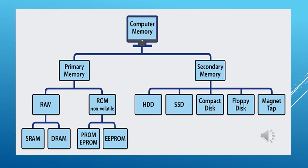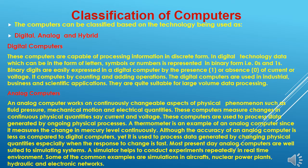Under the category of secondary memory comes Hard Disk Drive (HDD). The latest technology is SSD, Solid State Drives. Other secondary storage devices include Compact Discs (CDs), Floppy Disks, and Magnetic Tapes. Magnetic Tapes are not much in use these days, and floppy disks are also out of use now. CDs have been replaced by DVDs, Blu-ray Disks, Pen Drives, and Flash Drives as common secondary memory devices.